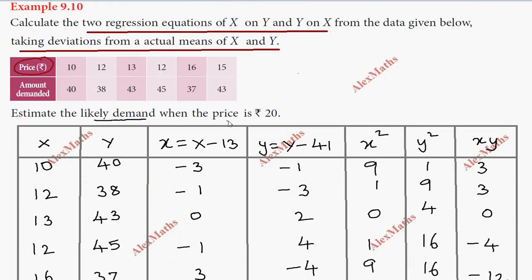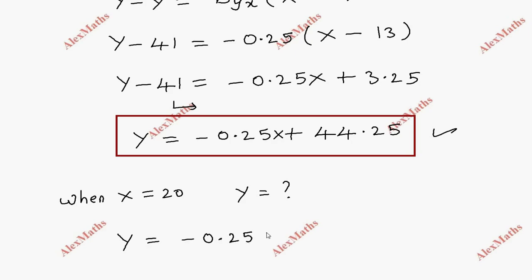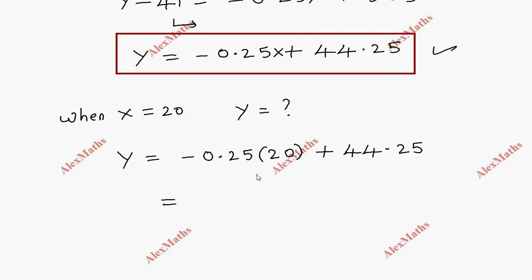Now estimate the likely demand when the price is 20. So price x equals 20. Using the regression equation of y on x: y equals -0.25 times 20 plus 44.25, which gives y equals -5 plus 44.25, so y equals 39.25.